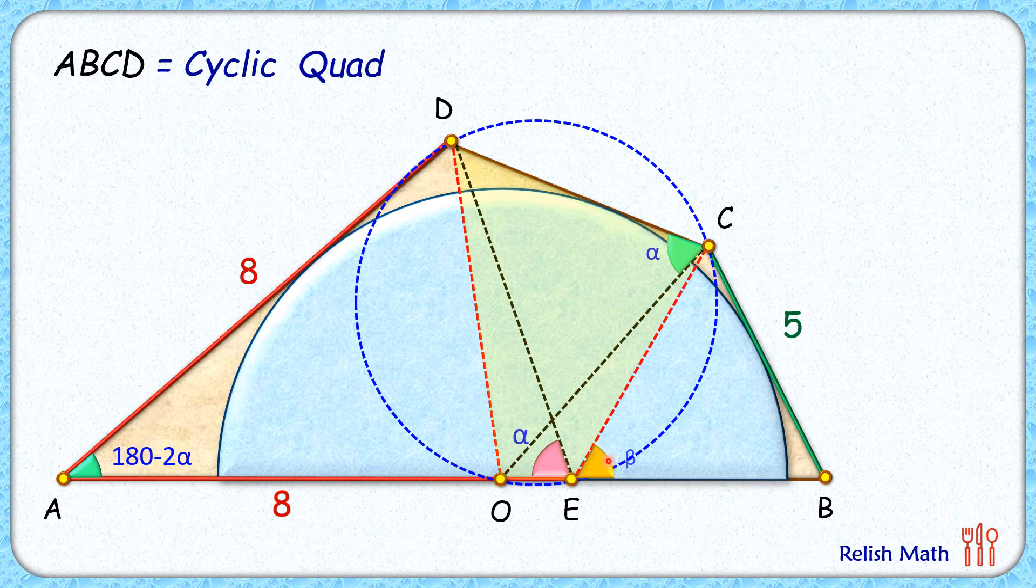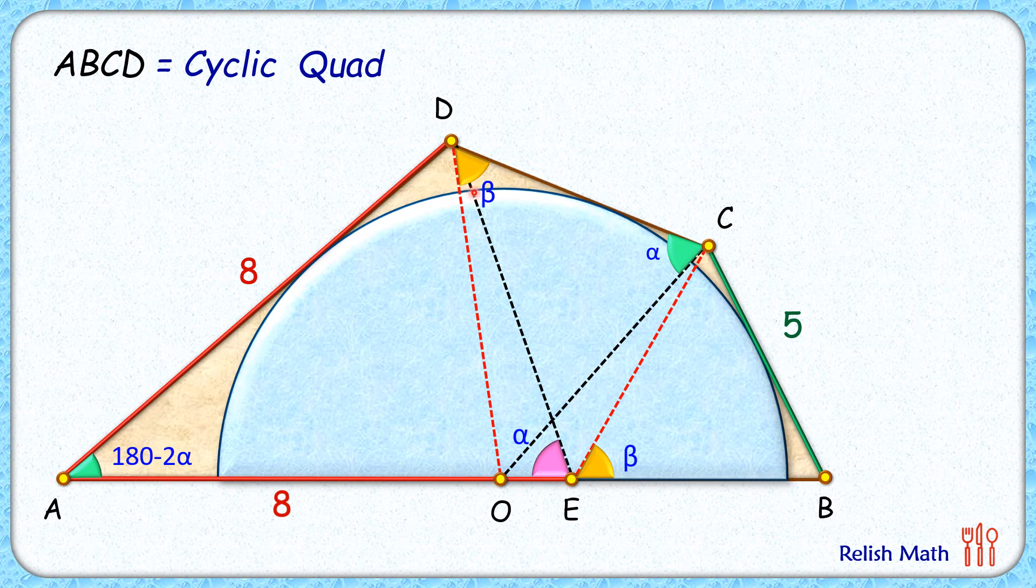If we take this angle as beta degrees, by theorem the exterior angle of a cyclic quadrilateral equals the interior opposite angle. So this angle will also be beta degrees.